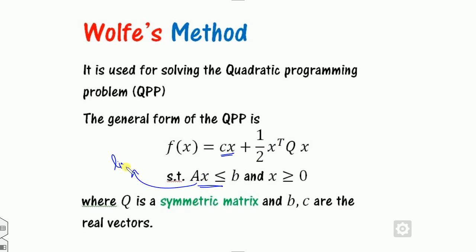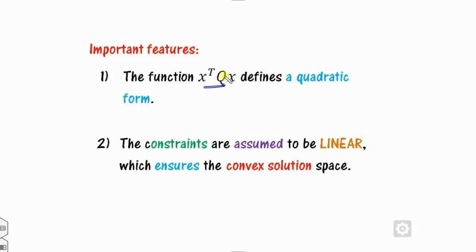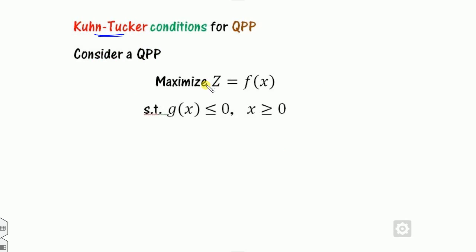The constraints must be linear because of convexity, and Q is a symmetric matrix — the transpose of the matrix is itself. Since x-transpose times Q times x represents the quadratic terms, this expression is called the quadratic form. The objective function is linear plus quadratic, and the constraints are linear.